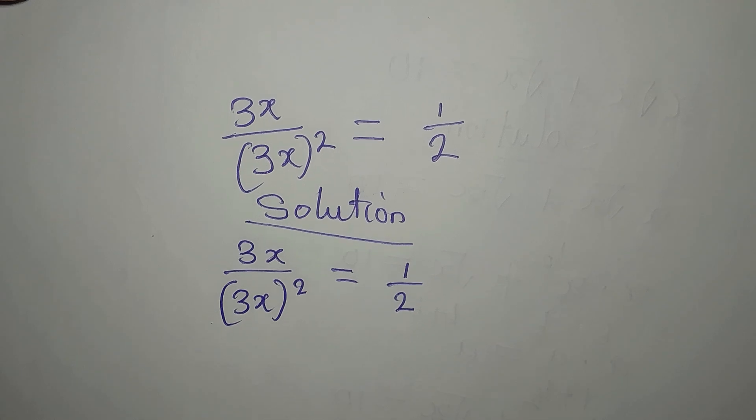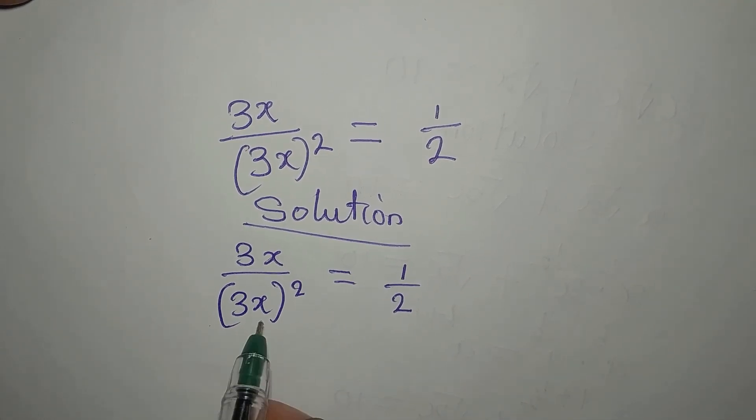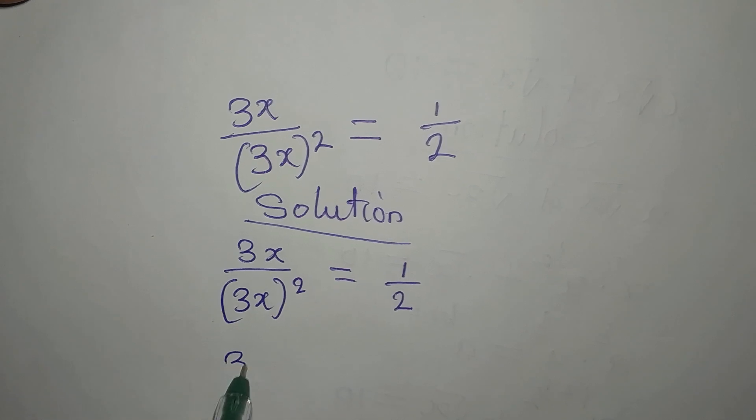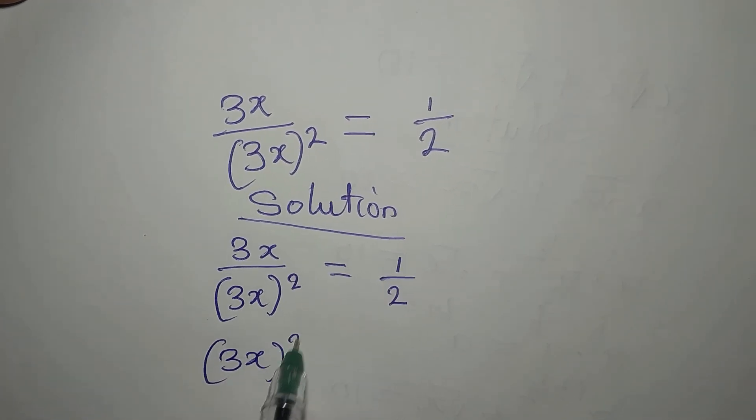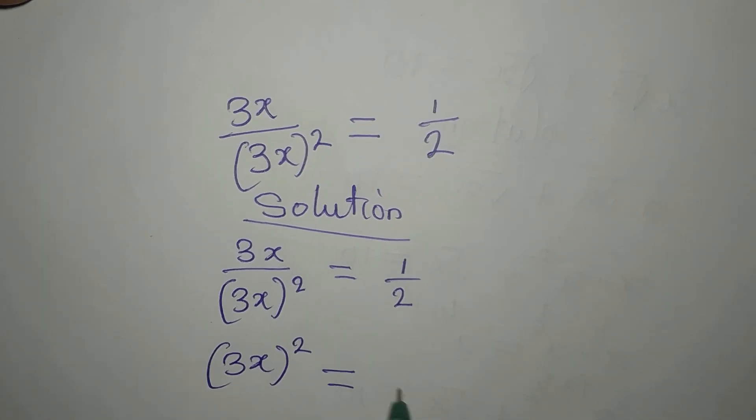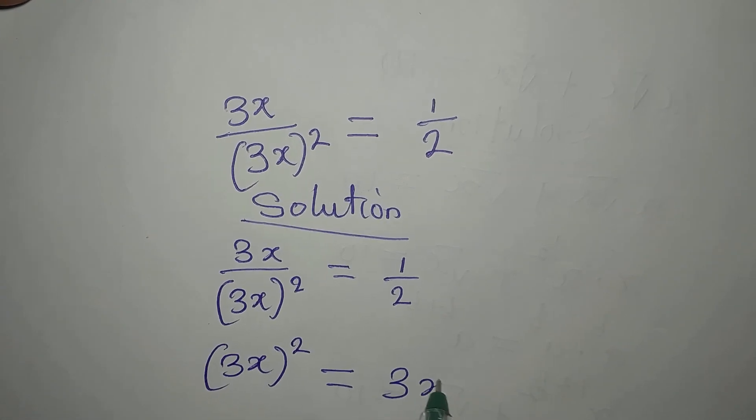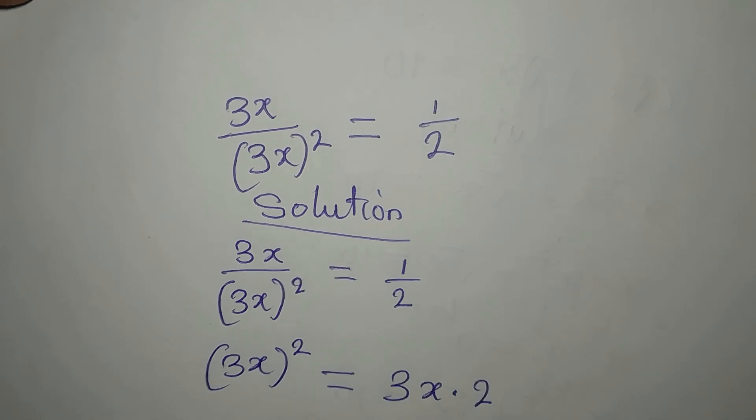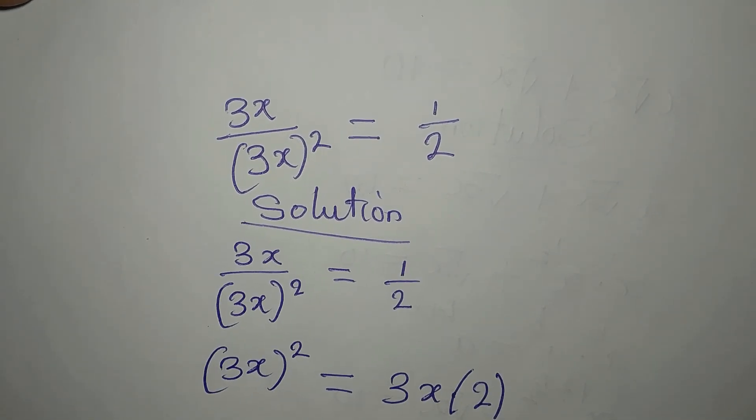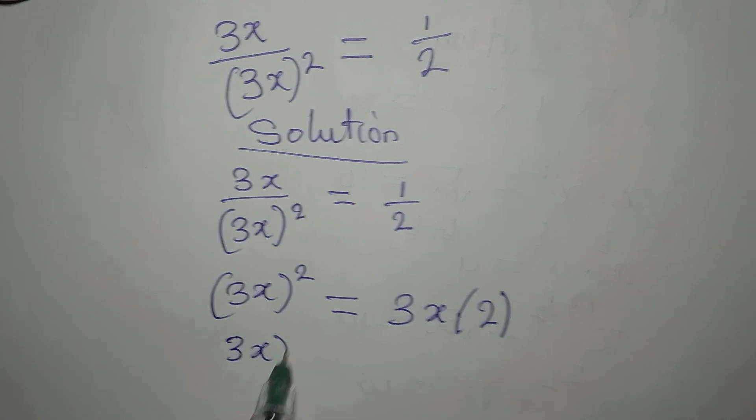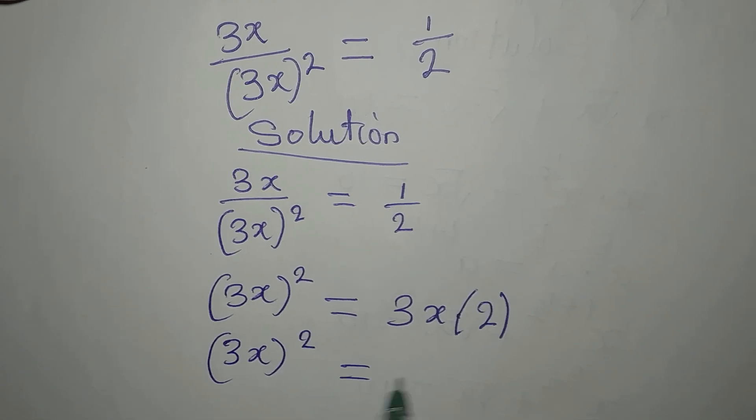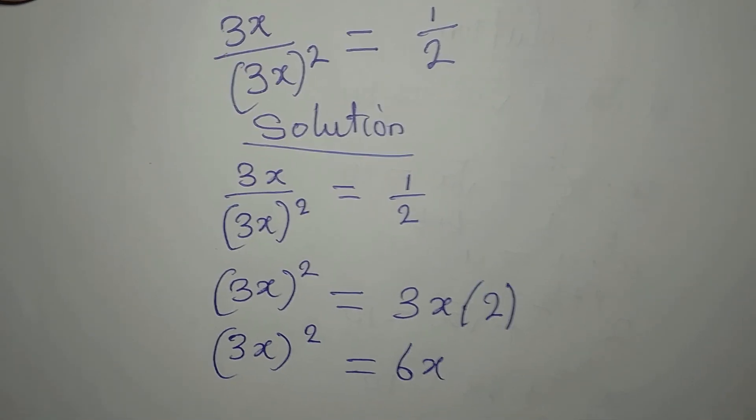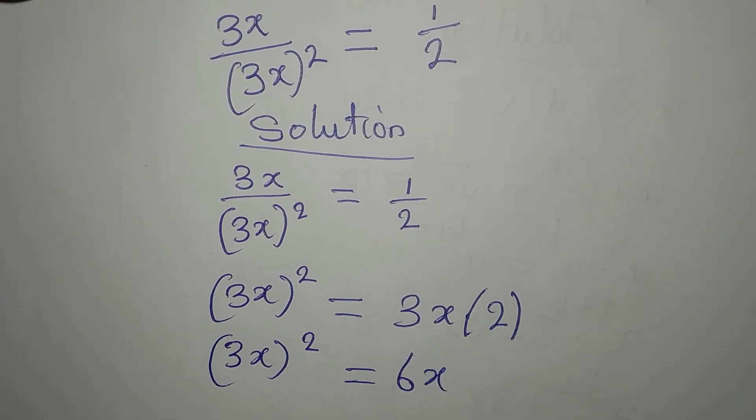Here is the shortcut I want to use. Let's cross multiply so that these times this will give us 3x to the power of 2, and that will be equal to 3x times 2. Now we have 3x squared equals 6x.